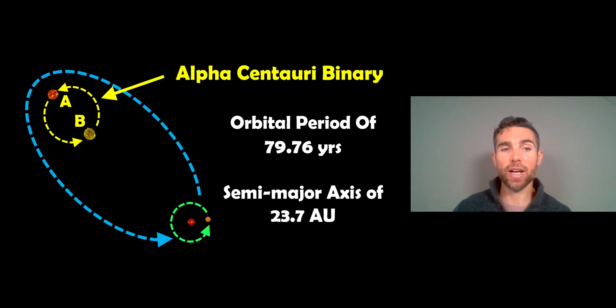And their semi-major axis, their separation, is about, well, just under 24 AU, which actually is quite close, really.